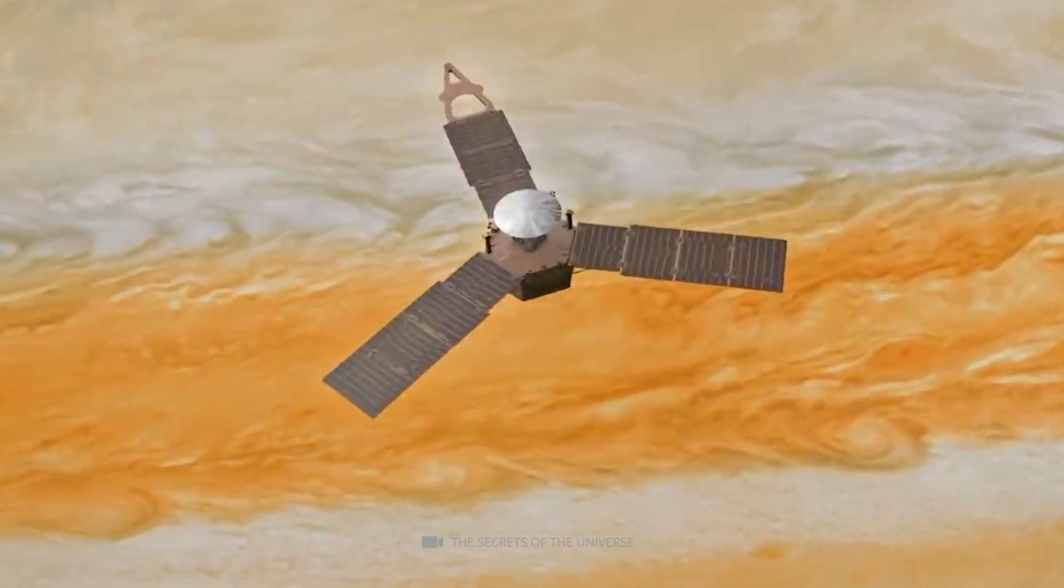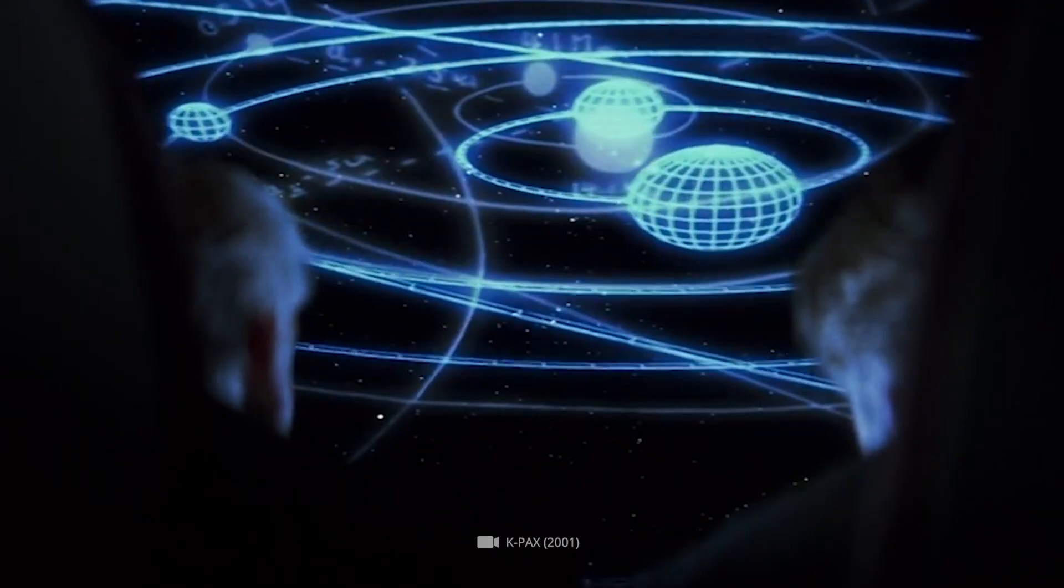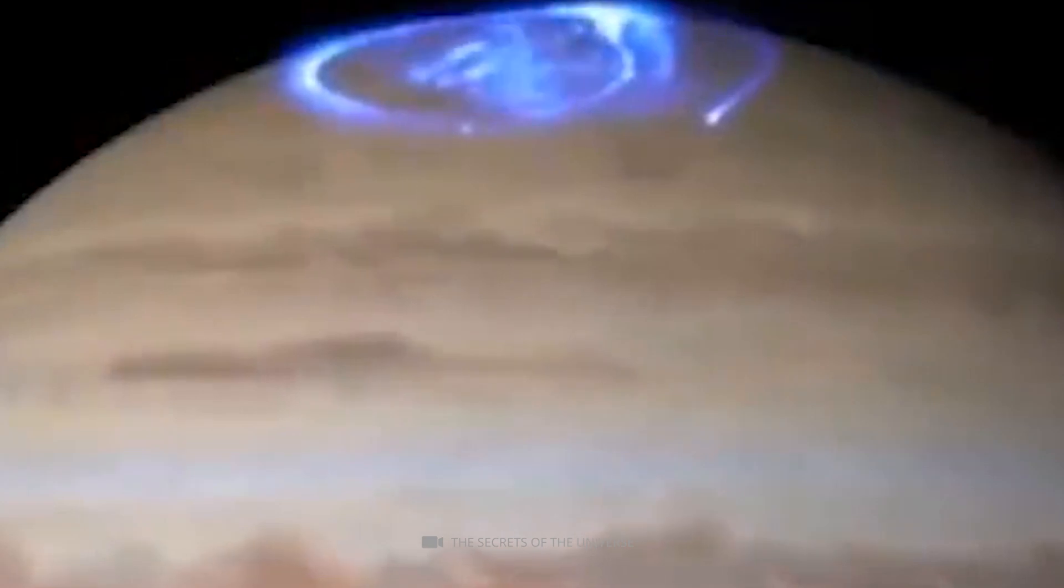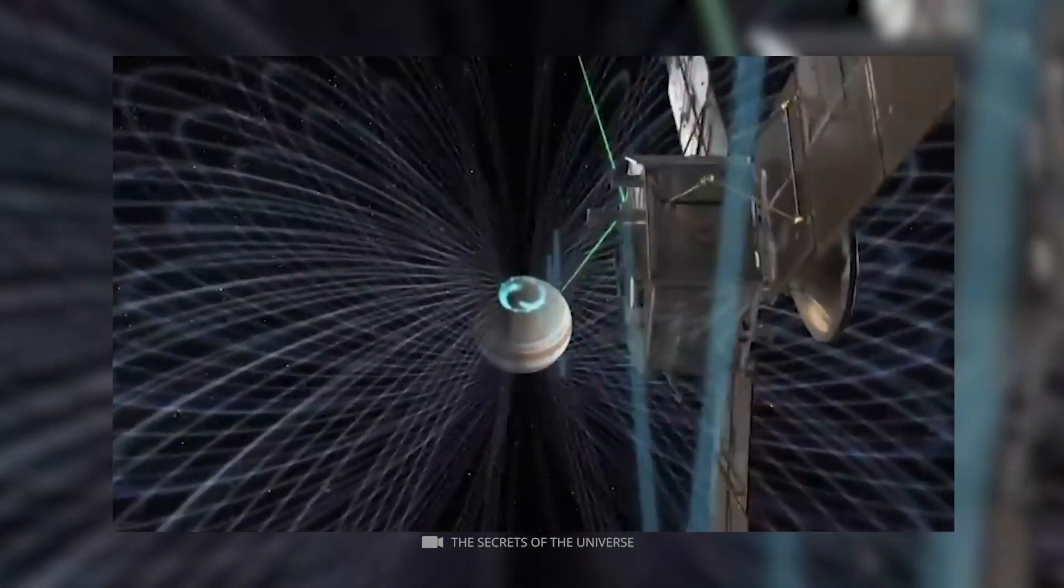Juno has orbited Jupiter multiple times, providing scientists with an unprecedented look at the aurora's three-dimensional structure, which was impossible before. That has enabled them to identify the unique auroral features, including powerful and concentrated auroral bands.